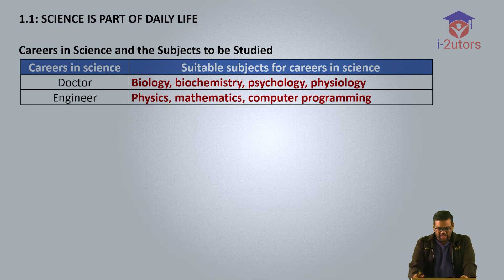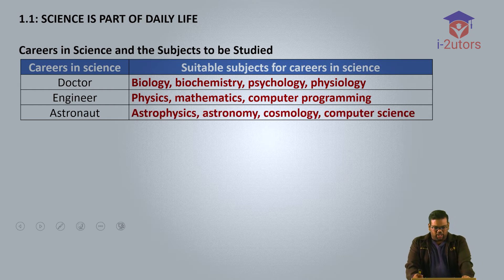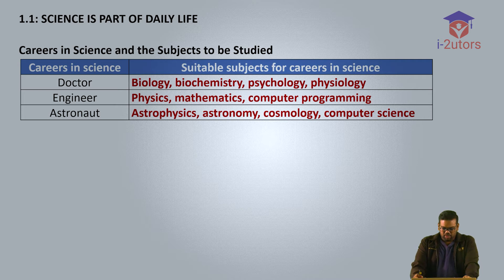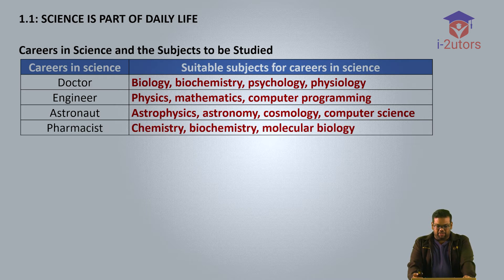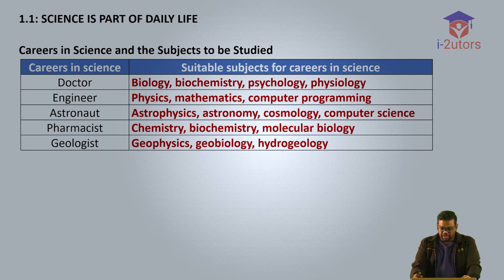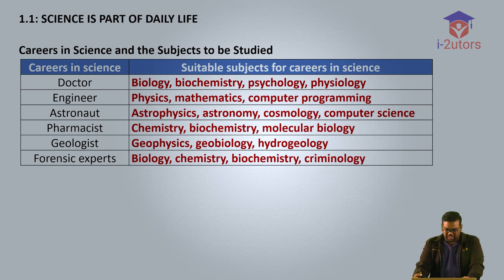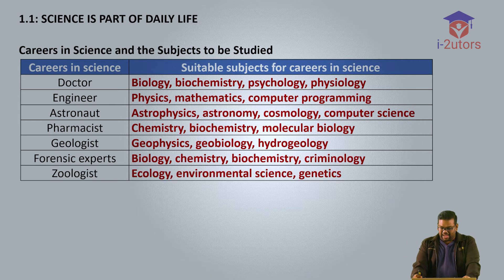Number 3, astronaut — needs to study astrophysics, astronomy, cosmology and computer science. Number 4, pharmacist — focus on chemistry, biochemistry and molecular biology. Number 5, geologist — study geophysics, geobiology and hydrogeology. Number 6, forensic expert — needs biology, chemistry, biochemistry and criminology. Number 7, zoologist — requires ecology, environmental science and genetics.